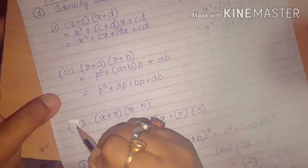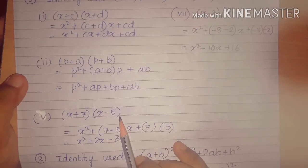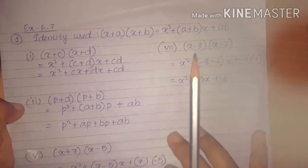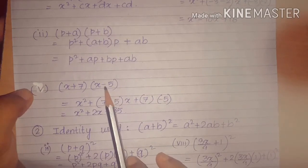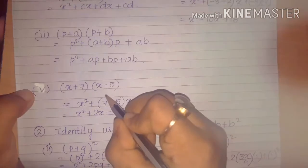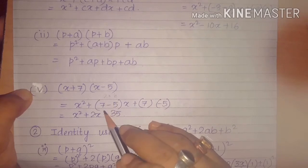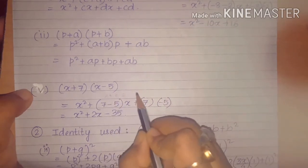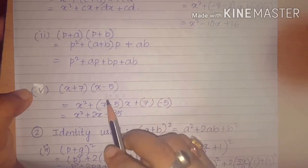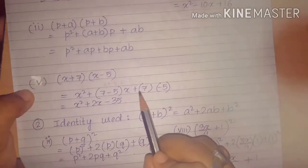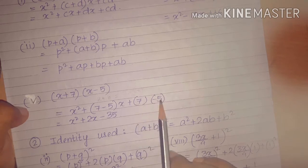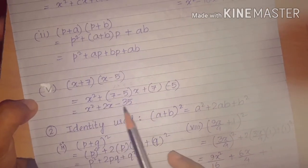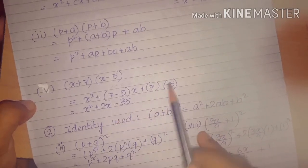Next is question number 5: (x+7)(x−5). Using the identity, we write x² + (a+b)x + ab. Here a is positive 7, but b is negative — so in place of b we write −5. So a+b = 7+(−5) = 7−5 = 2. Therefore we get x² + 2x − 35, since a×b = 7×(−5) = −35.